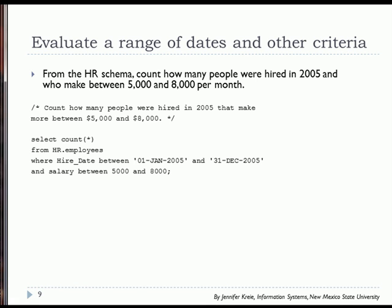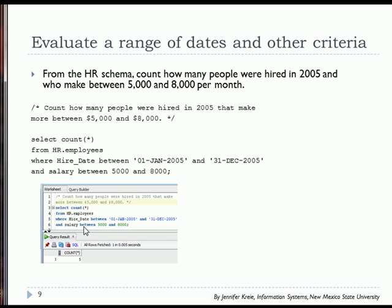Let's try getting a count of how many people were hired in 2005 and who make between 5,000 and 8,000 per month. We have SELECT COUNT(*) because we're not looking for individual employee data, just how many from HR employees. We've added in the WHERE clause our date range from January 1st through December 31st of 2005, and salary between 5,000 and 8,000. We get a count of five.